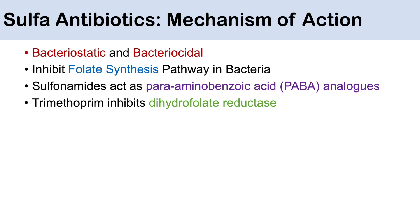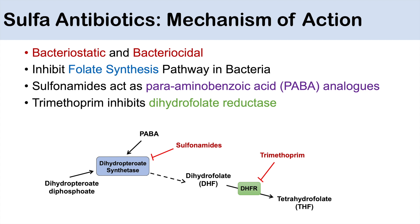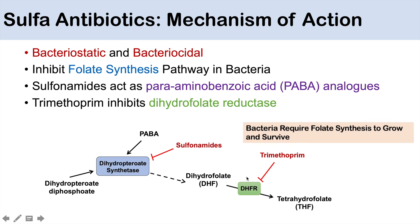Trimethoprim inhibits the dihydrofolate reductase enzyme in the folate synthesis pathway. In the bacterial folate synthesis pathway, dihydropteroate diphosphate is acted on by dihydropteroate synthetase with PABA, leading to the production of dihydrofolate, which is then acted on by dihydrofolate reductase to produce tetrahydrofolate. Sulfonamides inhibit dihydropteroate synthetase by mimicking PABA, and trimethoprim inhibits the dihydrofolate reductase step. Combined, they act synergistically to inhibit this pathway.